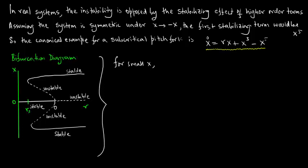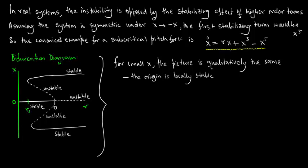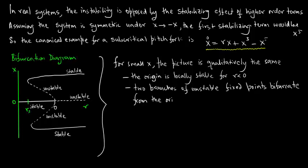For small x the picture is qualitatively the same. The origin is locally stable for r less than or equal to zero.